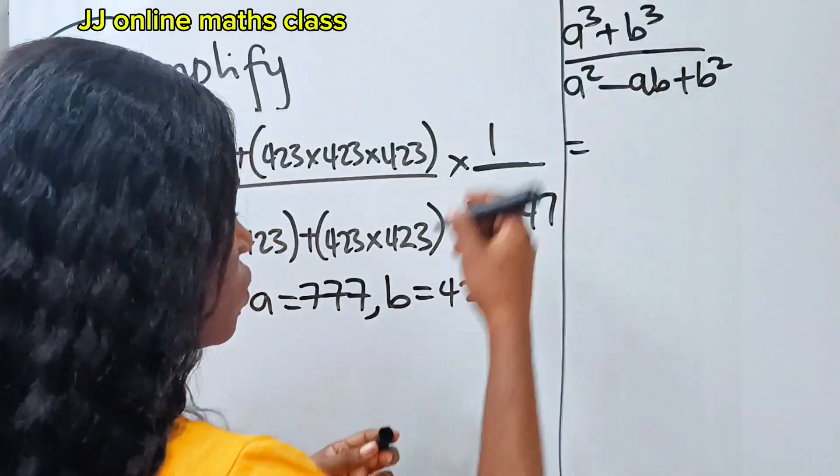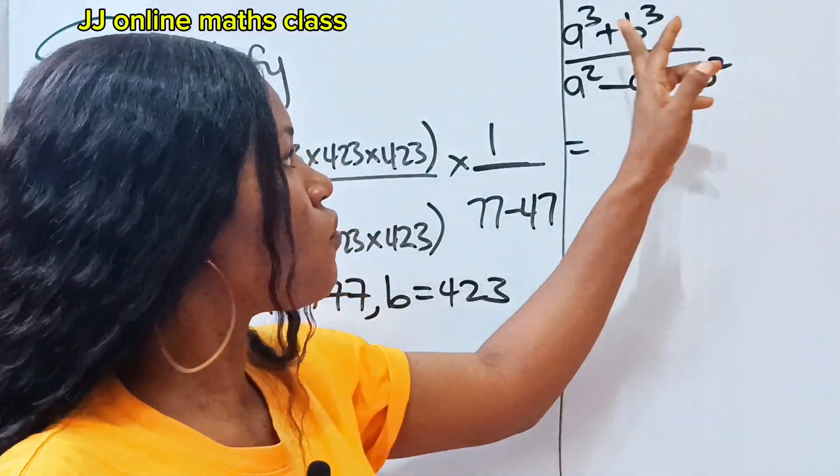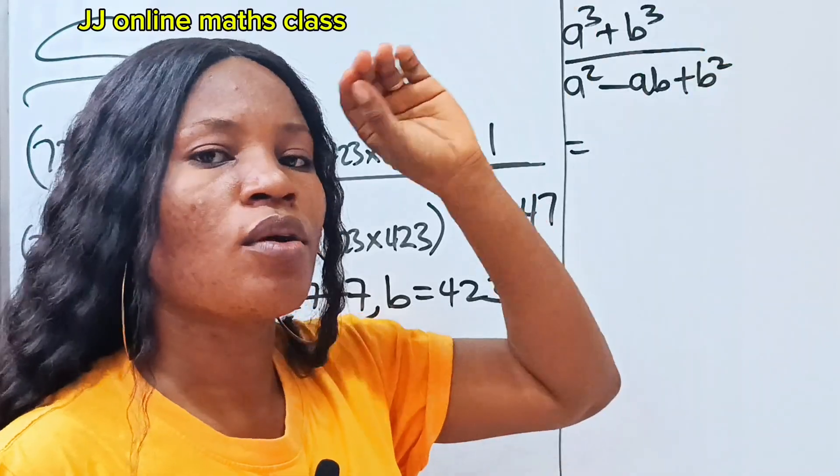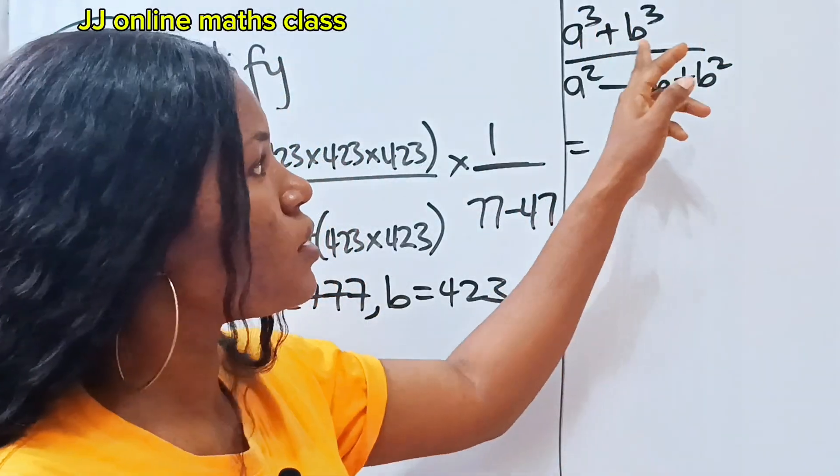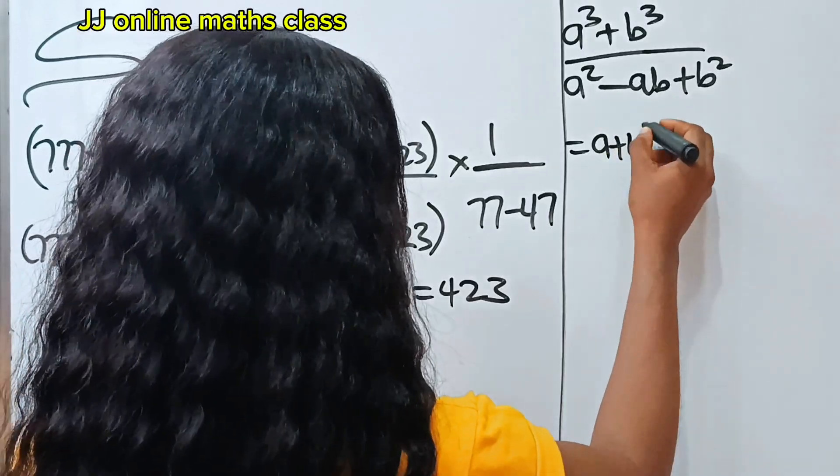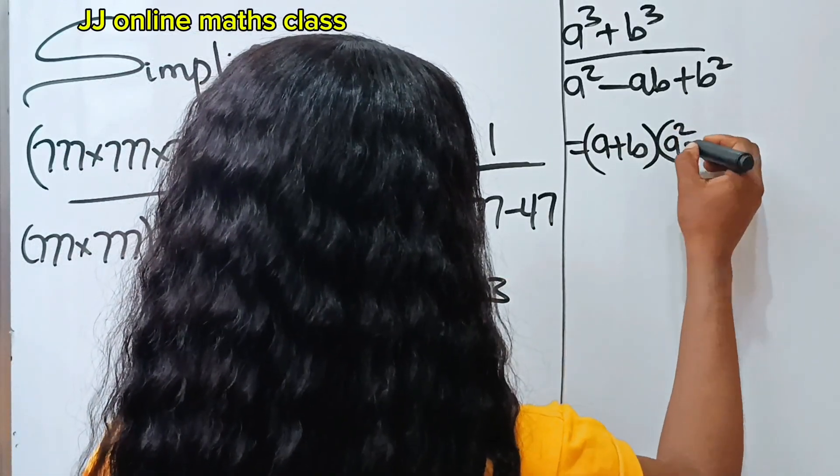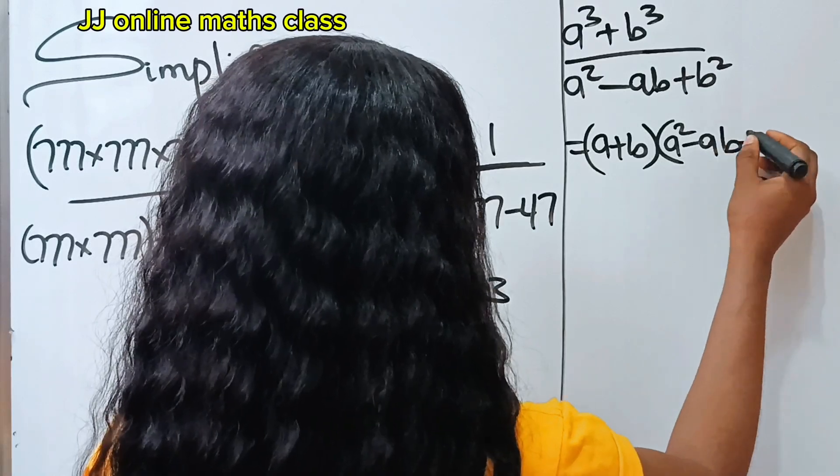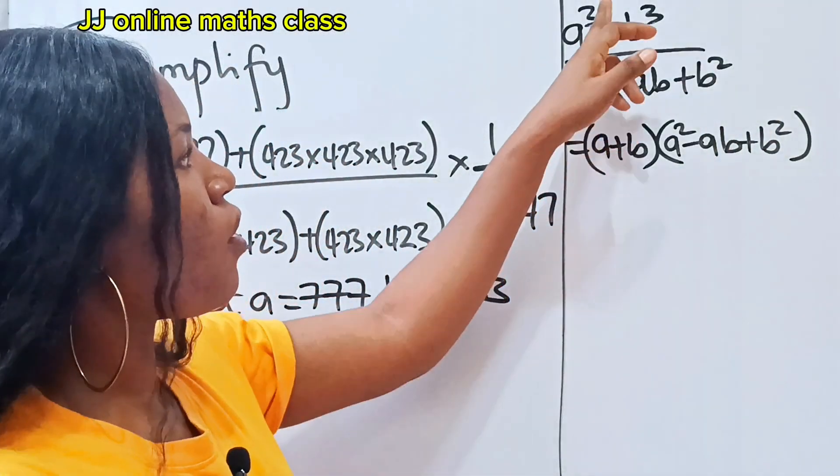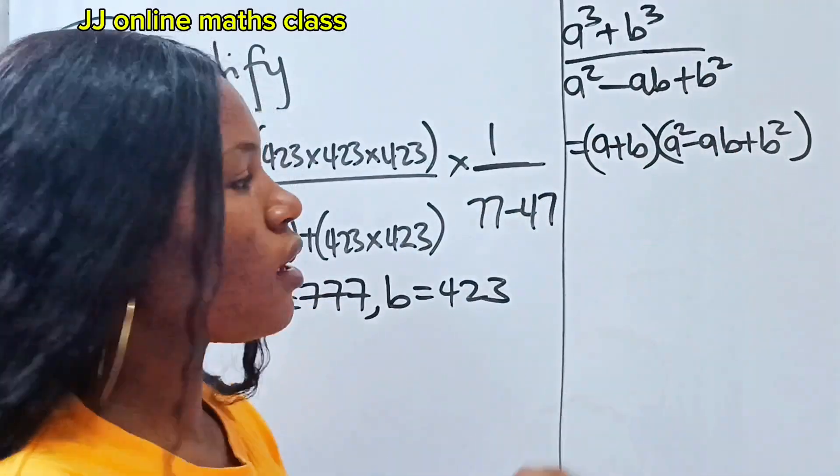This is equal to... let's go to algebra identity for this. a³ + b³, the algebra identity for this numerator is a plus b multiplied by a² minus ab plus b². So a³ + b³ is equal to this.